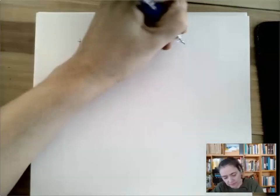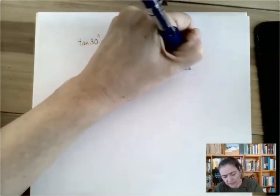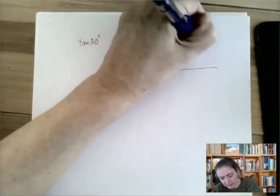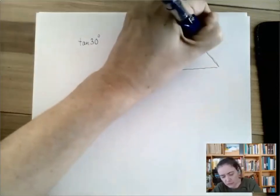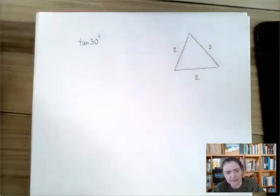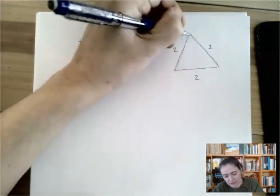For tangent 30 or anything of 30 degrees, I would start with a regular triangle with sides two, two and two, and then chop it in half.